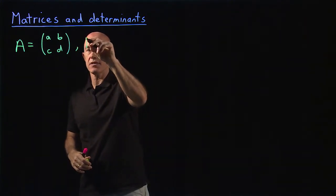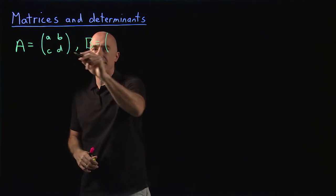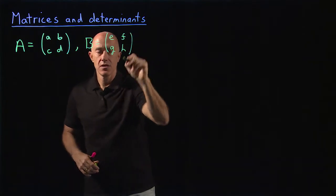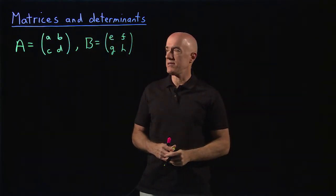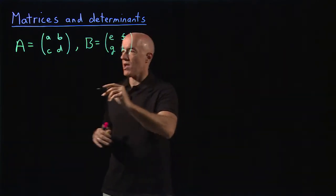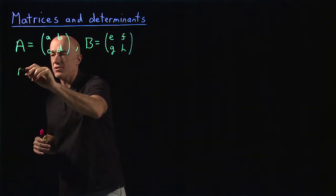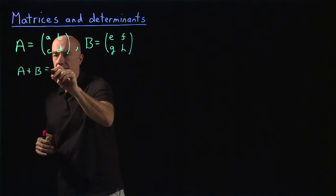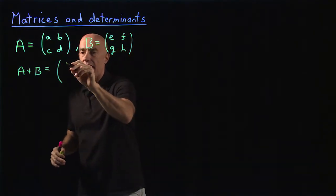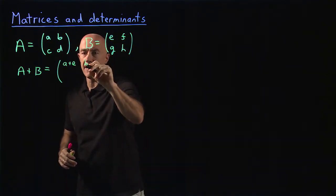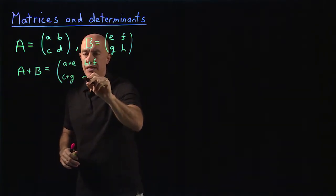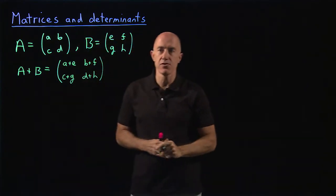Let's look at another matrix B. So we have A, B, C, D for the first matrix, and E, F, G, H for the second — two by two matrices. The basic matrix algebra: you can add these two matrices, A plus B. You just add them component wise: A plus E, B plus F, C plus G, and D plus H. Addition of matrices is straightforward.